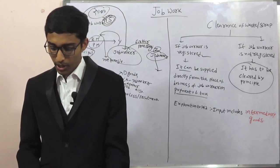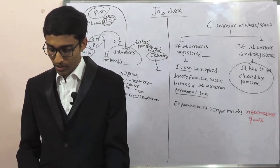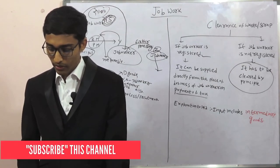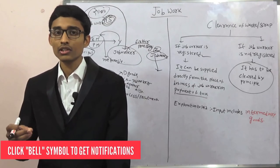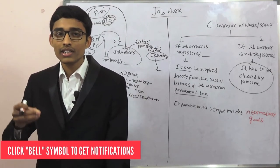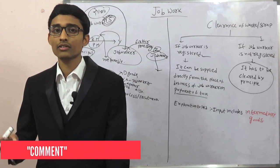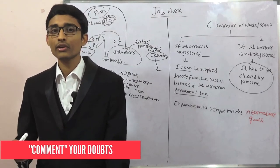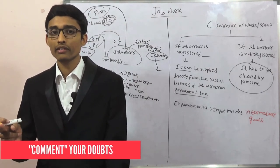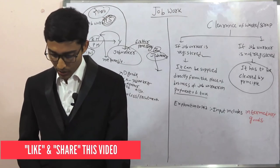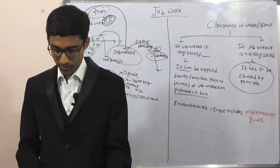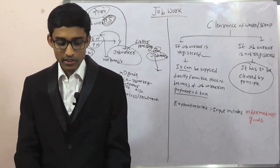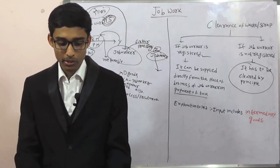As per Rule 45, sub-rule 1, the chalan should contain the details specified in Rule 55 of CGST Rules. Rule 55 deals with transportation of goods without invoice, so you have to issue a delivery chalan in lieu of invoice. Please download Rule 55 of CGST Rules. The delivery chalan shall be issued in triplicate.